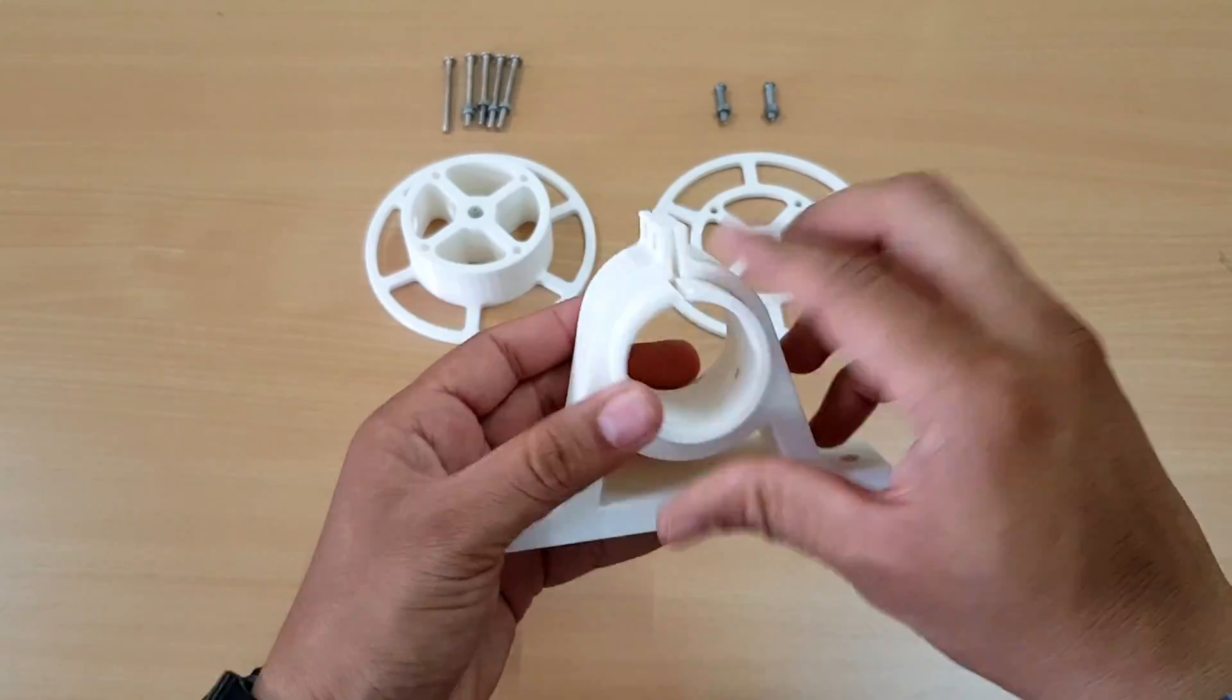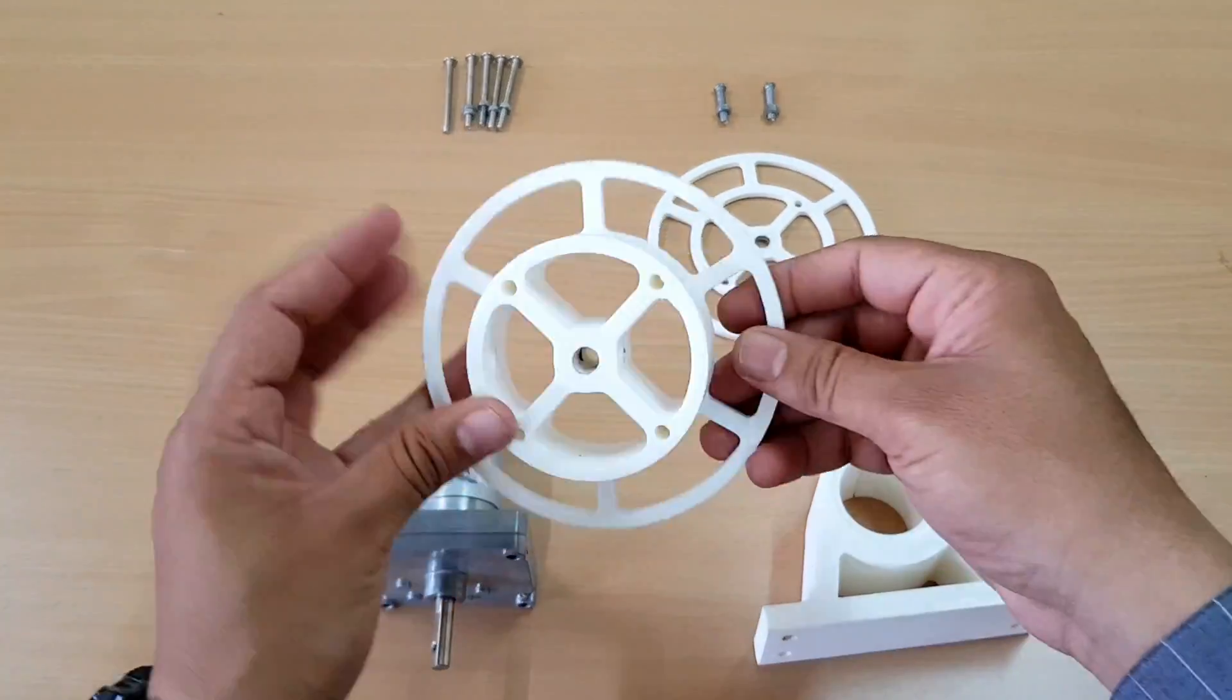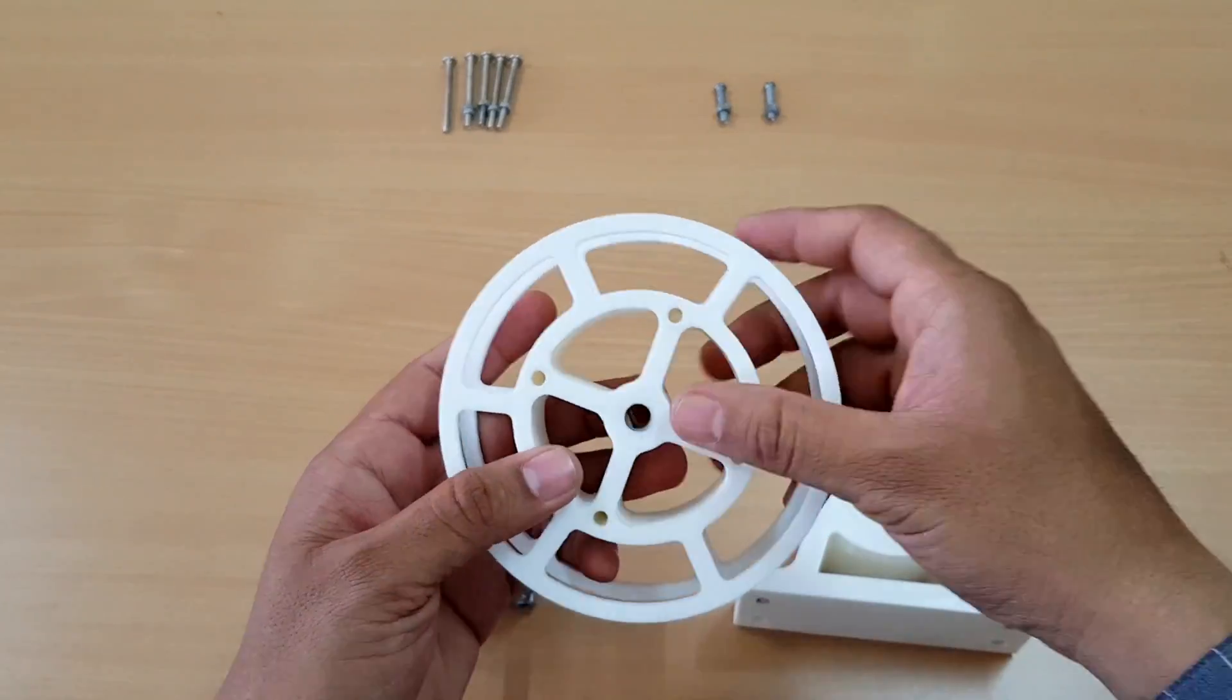Here are some 3D printed parts which will support our DC motor and a 3D printed spool for winding filament after extrusion.